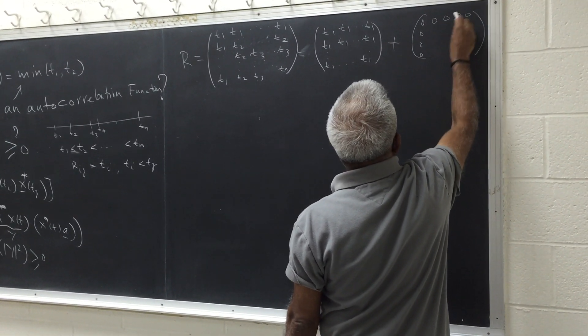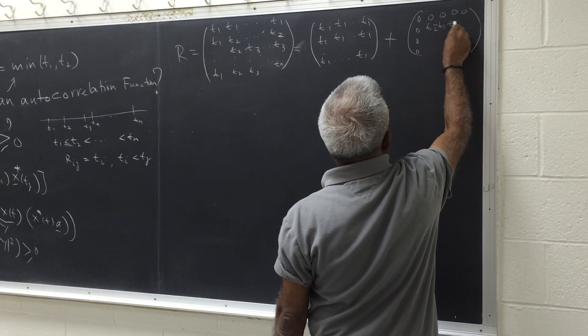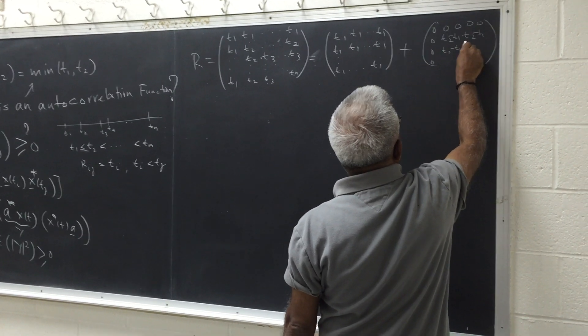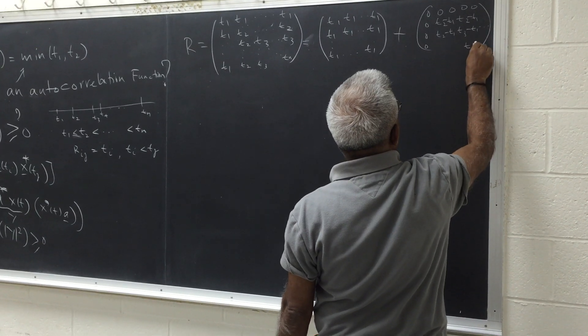And the first row is zero. And this will be t2 minus t1, t2 minus t1, etc. This will be t2 minus t1, this will be t3 minus t1, etc. This will be tn minus t1.